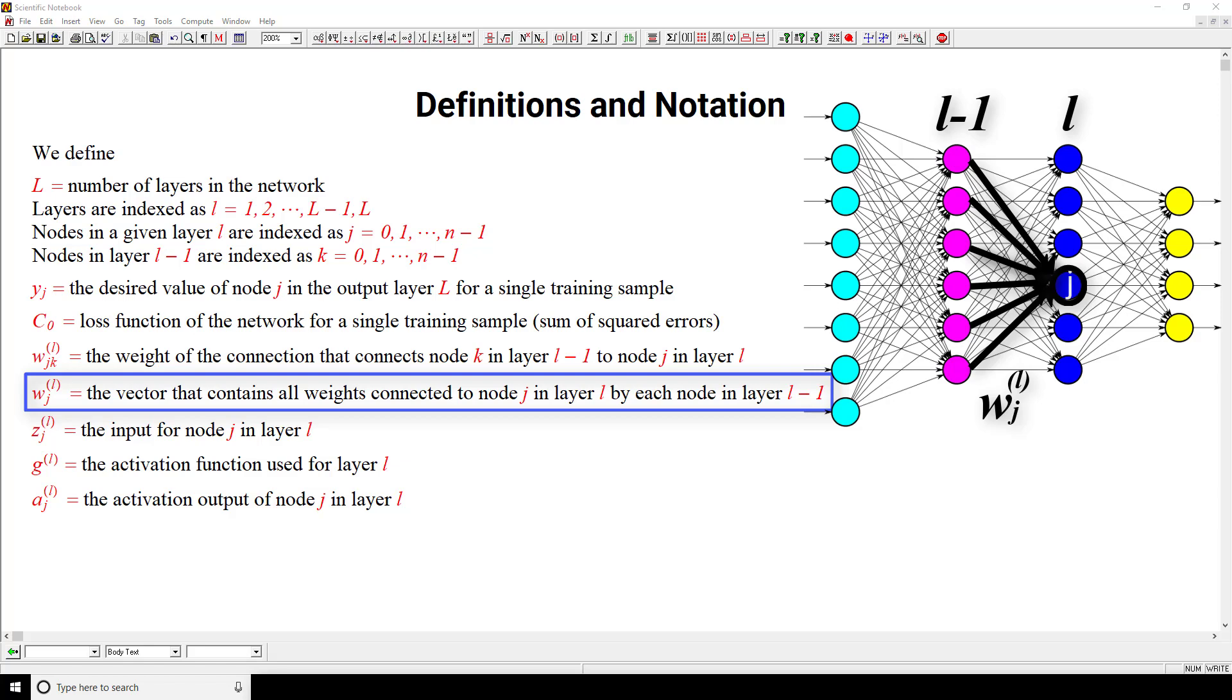Moving on, we now define Z sub j superscript small l as the input for node j in layer l. We know that each node within a layer receives a weighted sum of input from the previous layer. This weighted sum is being represented by this Z sub j superscript l here.